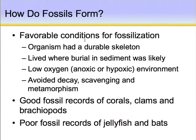What are some favorable conditions for fossils? You need to have a hard shell or skeleton, you need to be buried quickly, and you need to live in a low-oxygen or hypoxic environment. Quick burial allows the organism to avoid scavenging, and low oxygen prevents rapid decay, giving a better chance of preservation. Good fossil candidates include corals, clams, and brachiopods — all with hard shells. Poor fossils include soft-bodied jellyfish and bats; even though bats have bones, they're very delicate and get broken up, and since they die on land they're usually scavenged.